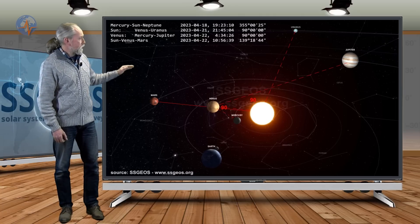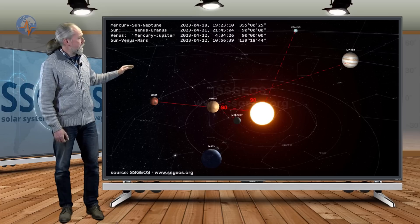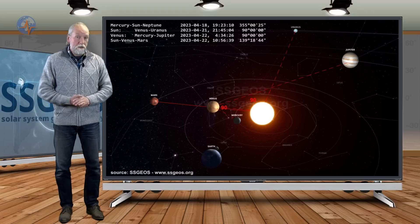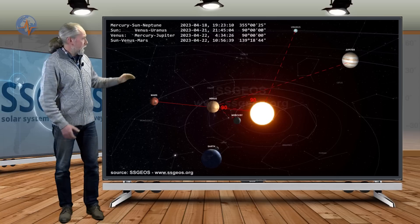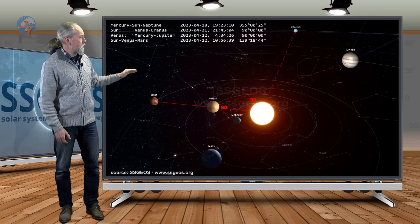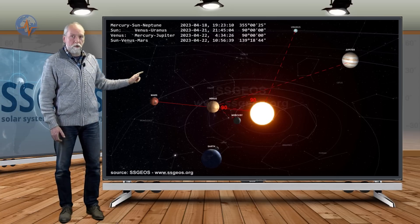We see that tonight at 2145 UTC we have Sun Venus and Uranus in a 90 degree angle. That's a heliocentric alignment. And several hours later early on the 22nd at 34 UTC Venus Mercury and Jupiter also in a 90 degree angle.